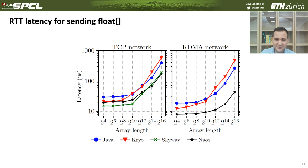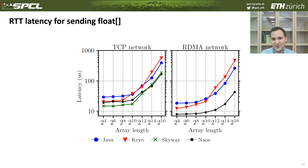Now I'd like to go to the evaluation and focus on the key results. First, we evaluated the latency of sending a float array, which is a simple but important data type. In the paper, we show more complex data types as well. For this case, sending an array of floats over RDMA, NAOS can achieve a latency of only 8 microseconds, enabling low-latency communication in RDMA Java applications. As you can see, it can beat all existing serialization libraries even over RDMA networks.